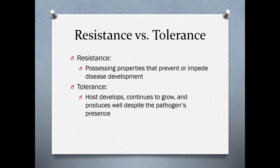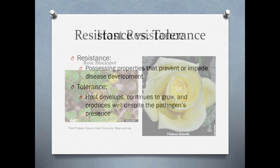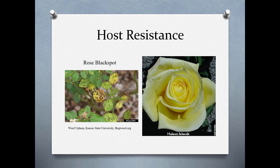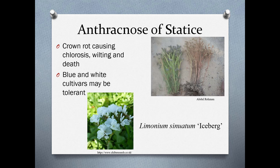Resistance means the plant has properties that prevent or impede disease development. Tolerance is when a host continues to grow and produce well even though the pathogen may be present. For example, roses routinely get black spot, and if you're selling plants you don't want to sell plants with black spots, so it's a good idea to use resistant rose cultivars—Helmut Schmidt is one such resistant rose. However, if there's a high enough population of rose black spot in the area from non-resistant plants nearby, even resistant plants will eventually get it due to too many spores in the area.